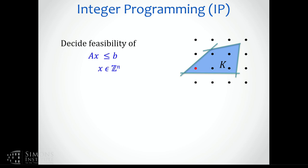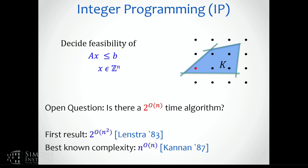Starting from the integer programming problem, I'm going to think of having some polytope, or more generally, a convex body, and I want to decide whether there's an integer point. A question that's been open for a long time is whether there is a single exponential time algorithm for this problem, such as we now have for CVP and essentially all of the Euclidean norm problems. We have single exponential time algorithms, but we do not have them for integer programming.